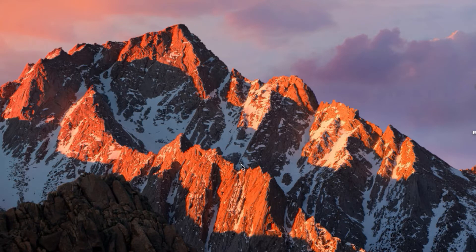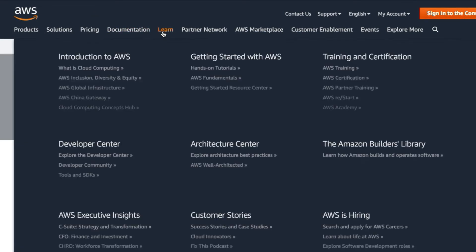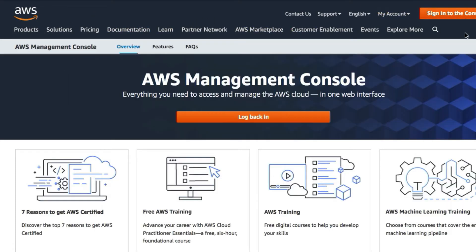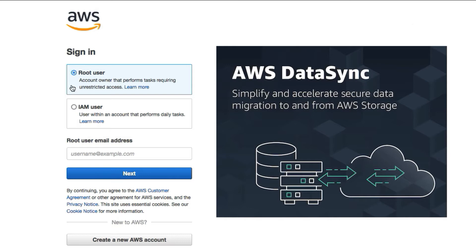In just a few simple steps. The first thing that we're going to do is to sign into the console. Go to aws.amazon.com and then click on the 'Sign into the console' button. I recommend that you use your IAM user — AWS actually recommends using your IAM user — but for learning purposes I'm just going to sign into my root user account.